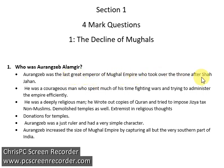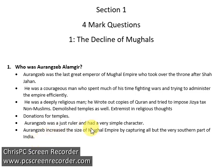He took over the throne from Shah Jahan, his father. You need to know how he was able to get the throne ultimately — by defeating and killing his brothers and then imprisoning his father. He was also a courageous man, because he fought several wars and battles and was successful in them. He was also able to increase his empire; the Mughal Empire became very vast during his lifetime as he expanded it towards the southern part of India.